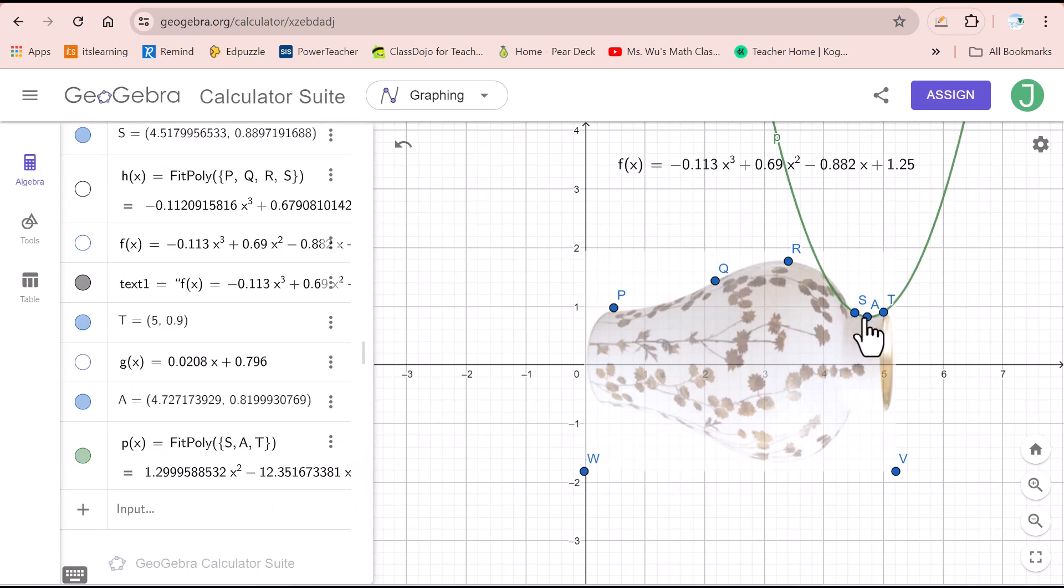If you want to, you can move this A to make this curve fit the upper boundary of the V better. Then you can use these three points to figure out the quadratic function.